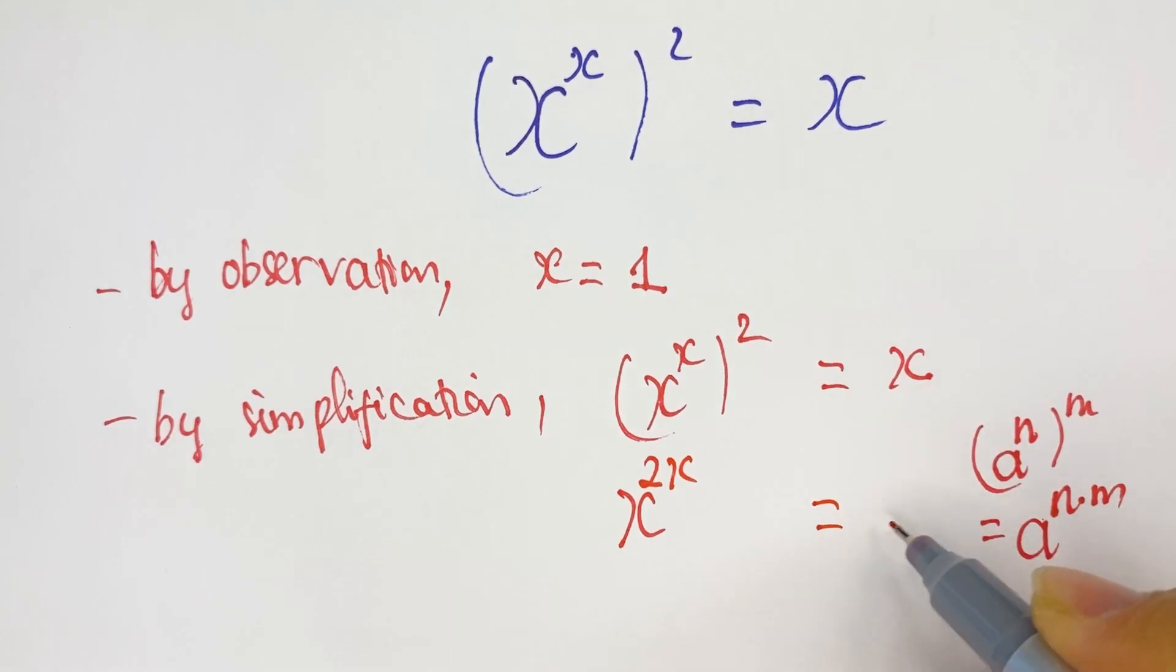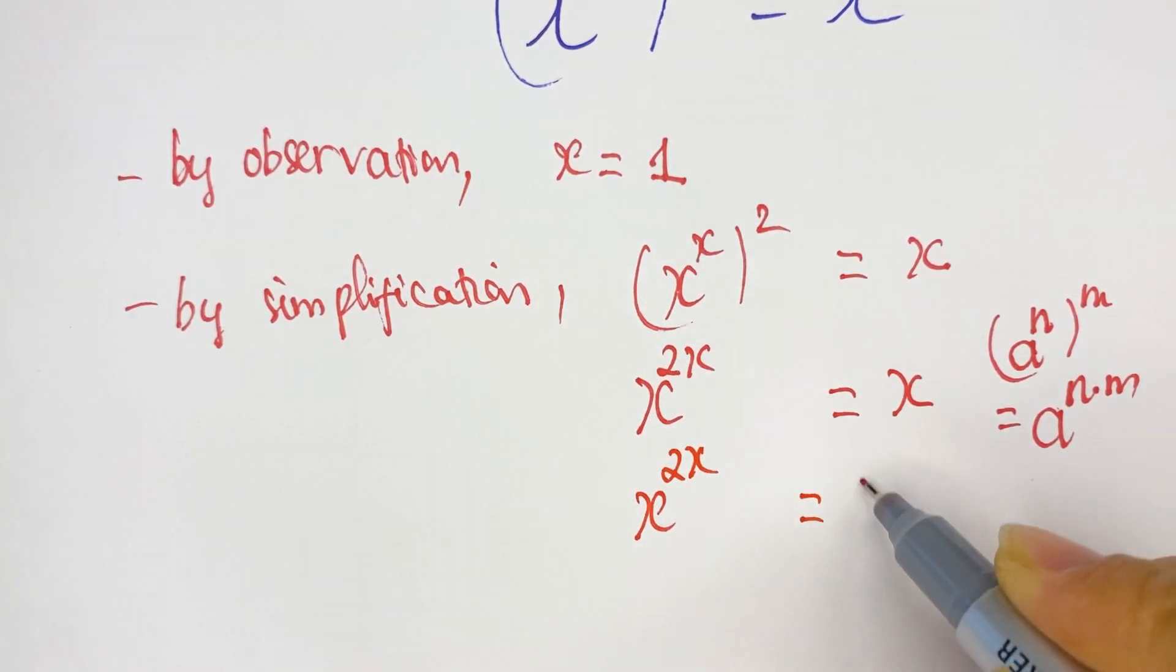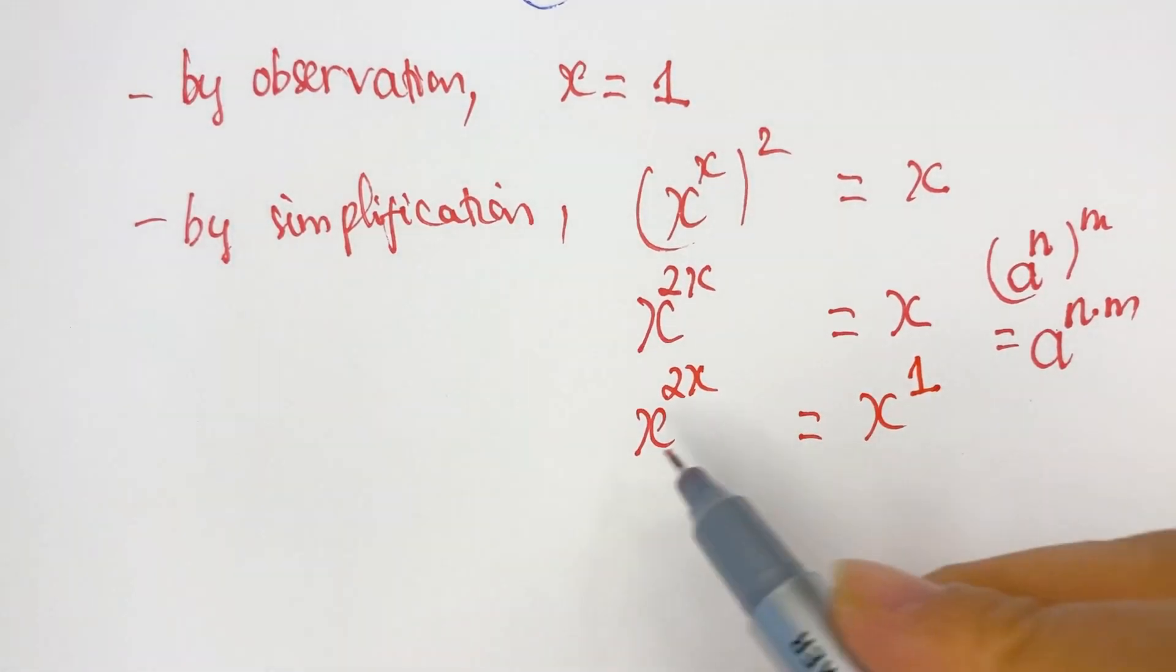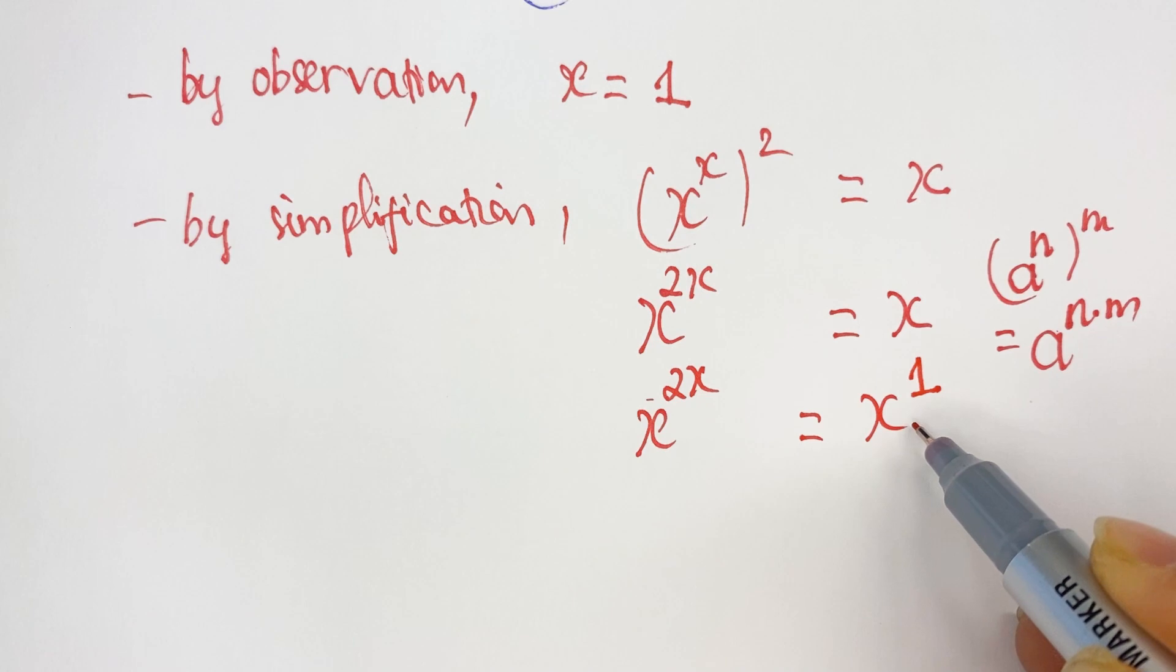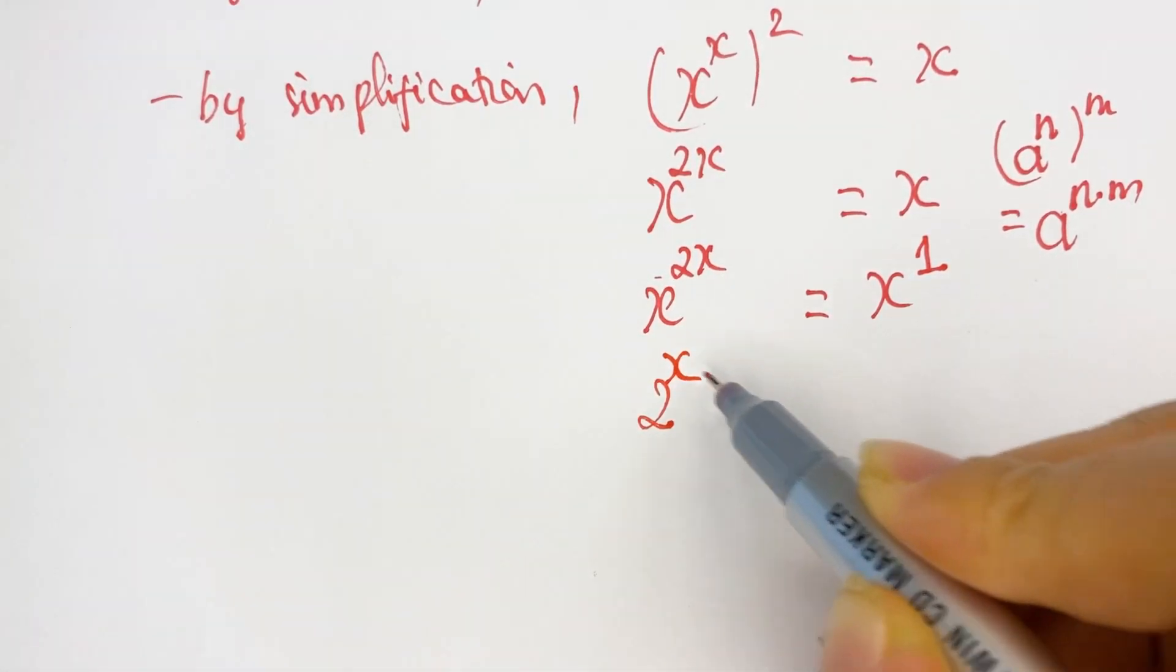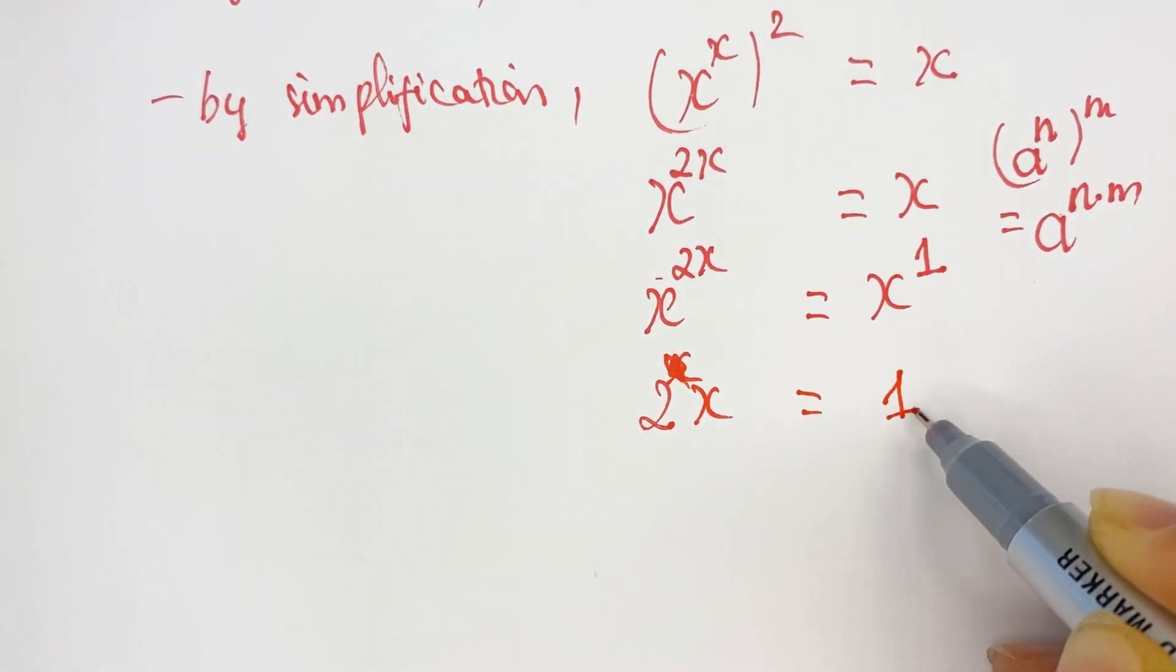And then you can get x, so you can rewrite x^(2x) equals x^1. You can see it's the same base, so therefore we have 2x equals 1.